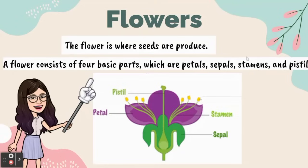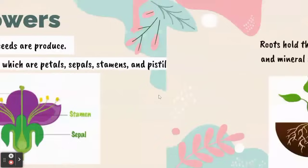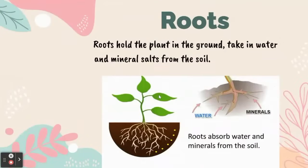A flower consists of four basic parts, which include petals. Next, roots — roots hold the plant in the ground and take in water and mineral salts from the soil.